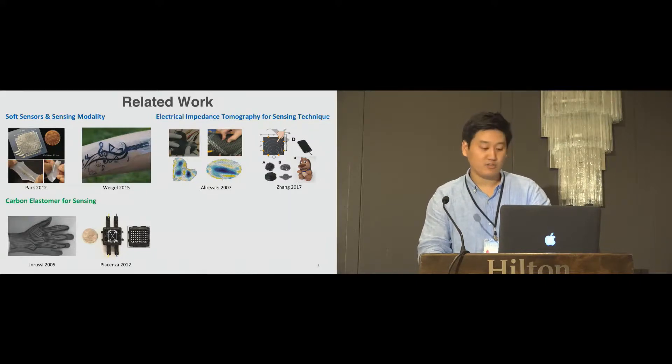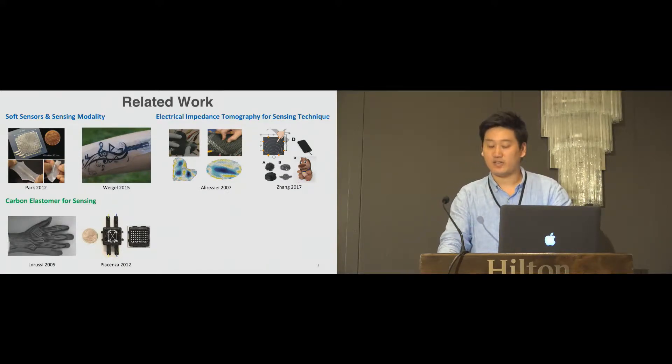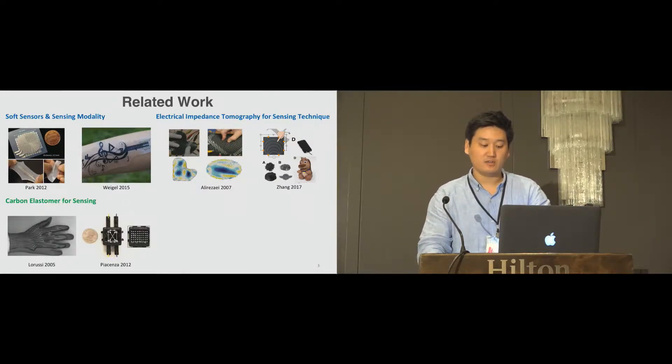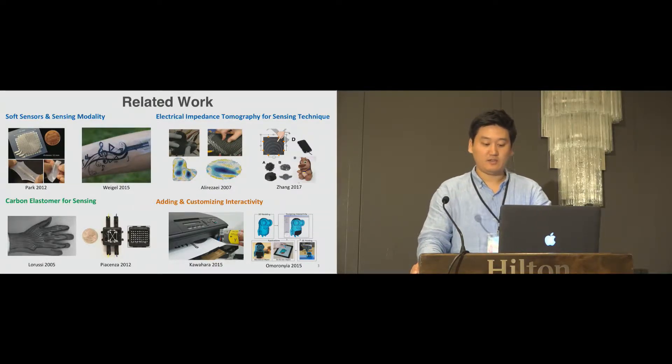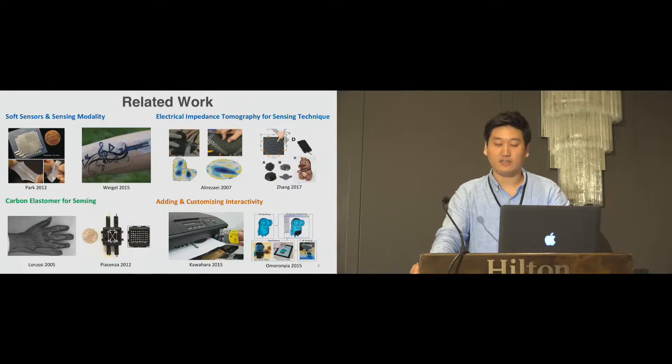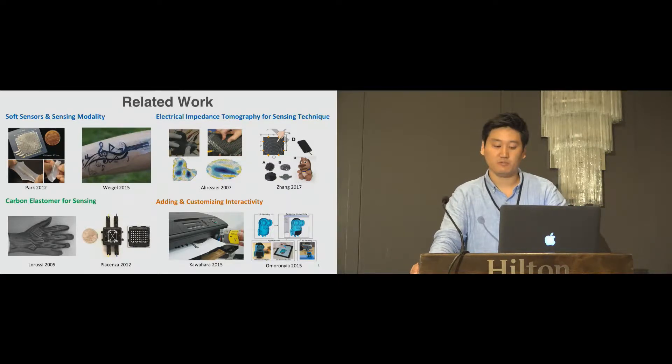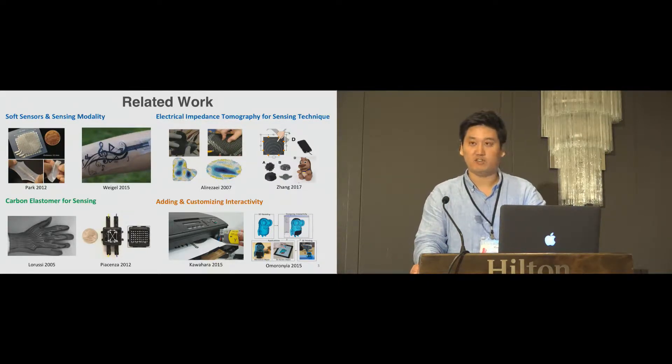We also utilize EIT sensing to implement multi-modal sensing for flexible as well as stretchable form factors. Carbon elastomer has been used widely for sensing purposes with its excellent piezoresistive properties. However, the long settling time requirements after deformation and non-linear characteristics hinder researchers from utilizing this material for real-time applications. In our work, we achieve real-time continuous contact sensing by overcoming these issues and propose a workflow that can customize soft metal sensors.